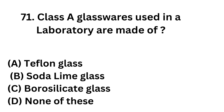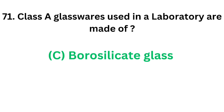Question number 71. Class A glasswares used in a laboratory are made of: Option A: Teflon glass. Option B: Soda lime glass. Option C: Borosilicate glass. Option D: None of these. The correct answer is Option C: Borosilicate glass. Class A glasswares used in a laboratory are made of borosilicate glass.